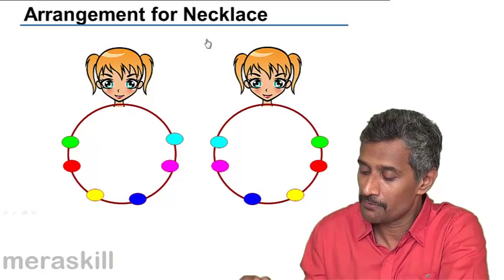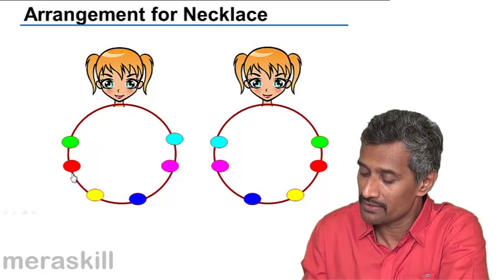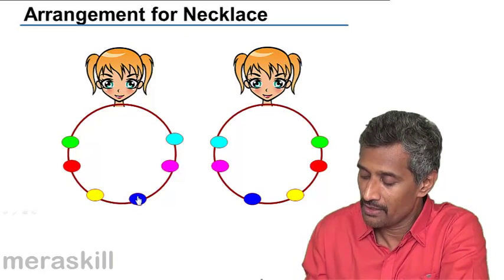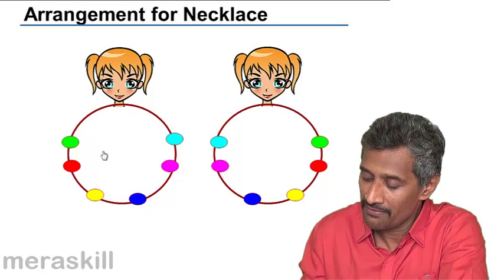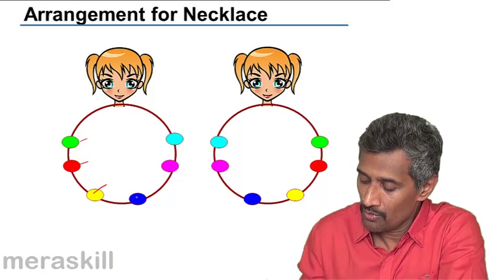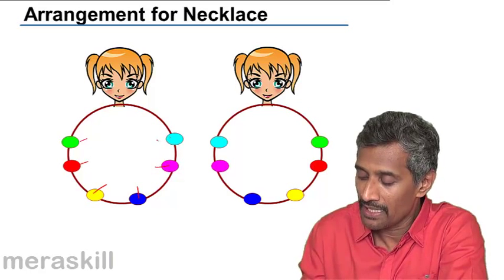Say for example, arrangement for a necklace. So you start this way: green, red, yellow, blue, pink. So we have green here, red, yellow, blue, pink and a light blue, a cyan.